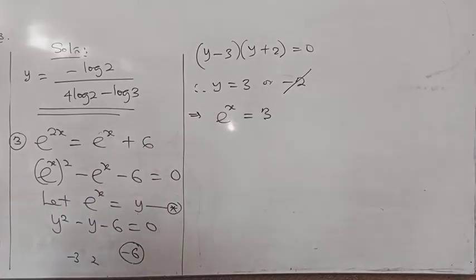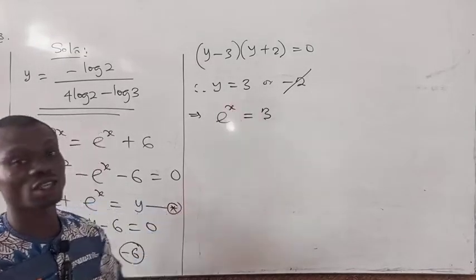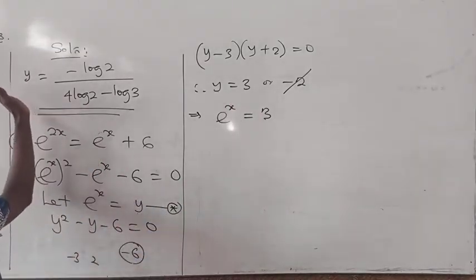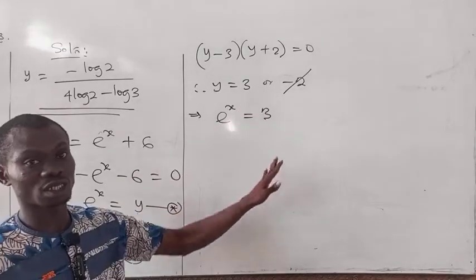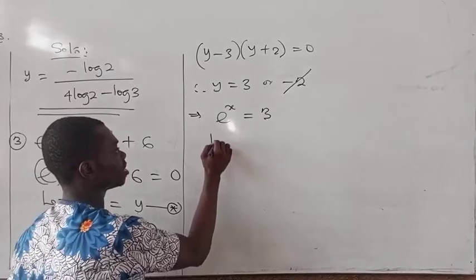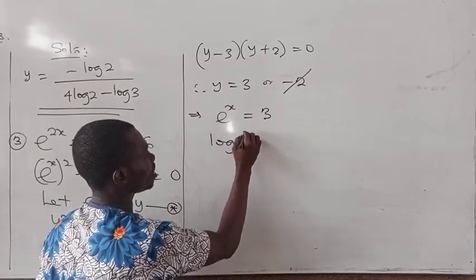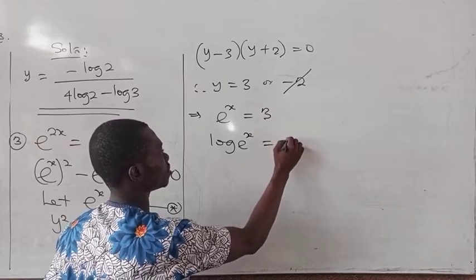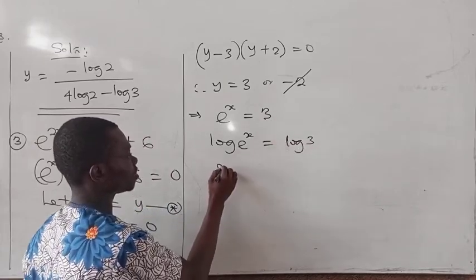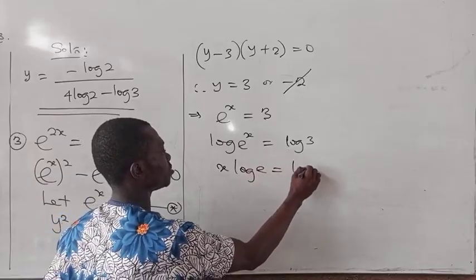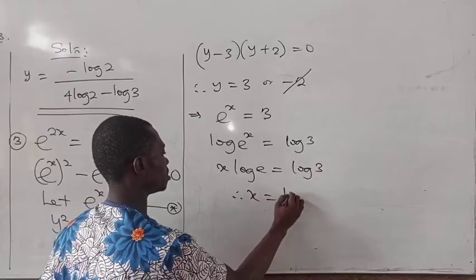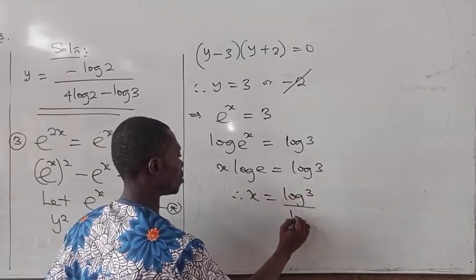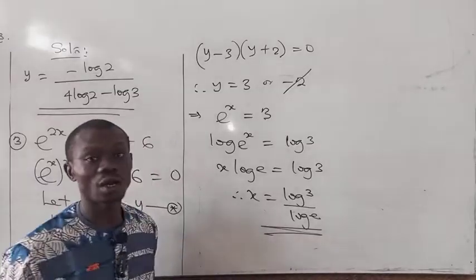So y equals 3 only, meaning e^x equals 3. To find x, we take the log of both sides: log of e^x equals log 3. Applying the power rule gives x times log e equals log 3, so x equals log 3 divided by log e. That is our solution.